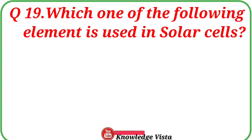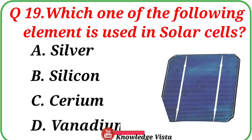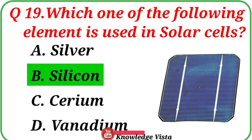Question number nineteen: Which one of the following elements is used in solar cells? Option A: Silver, B: Silicon, C: Cerium, D: Vanadium. Correct answer is option B: Silicon.